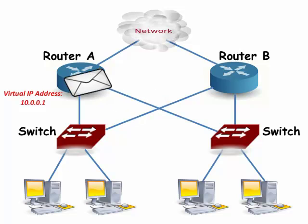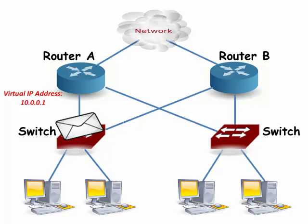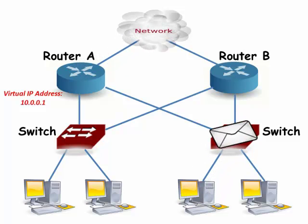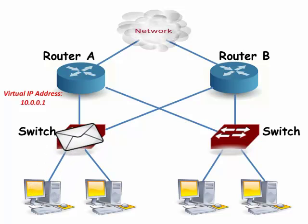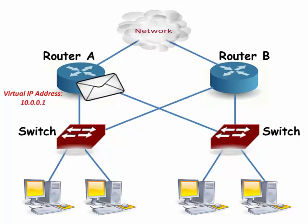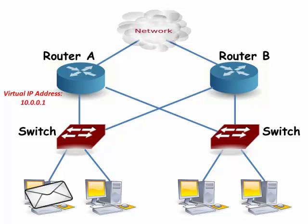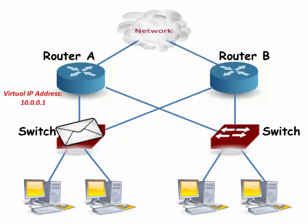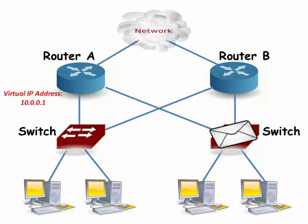We now have two routers: Router A and Router B. Router A is actively routing traffic to the internet and has a virtual IP address of 10.0.0.1, which is the default gateway. Router B is the backup or standby router just in case the active router goes down. Notice that the active router gets all of the packets sent to the default gateway, because it is playing the role of the virtual gateway router. The active router has cloned both the MAC address and the IP address of the virtual router.